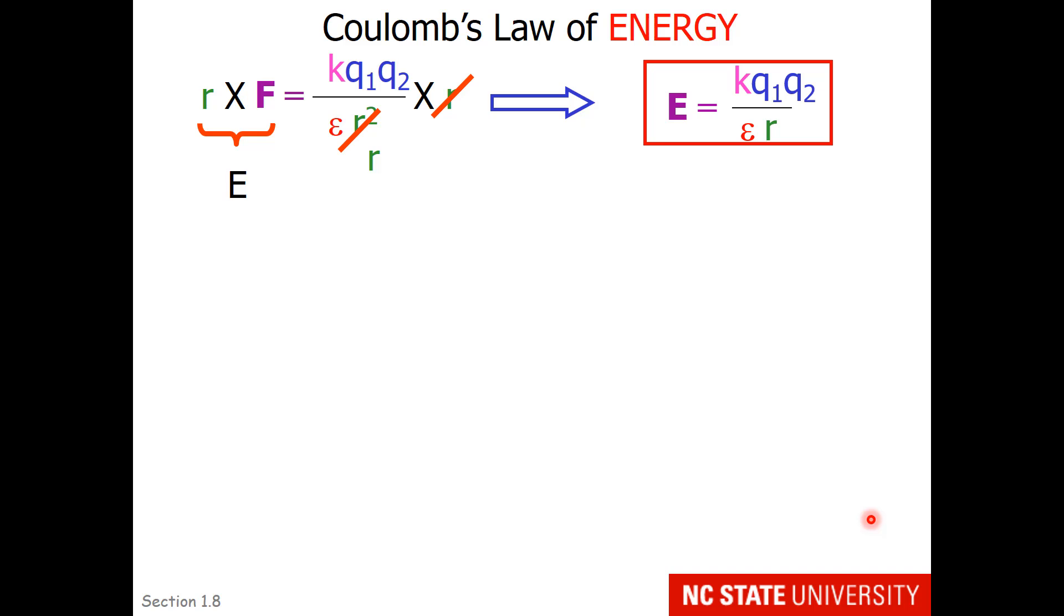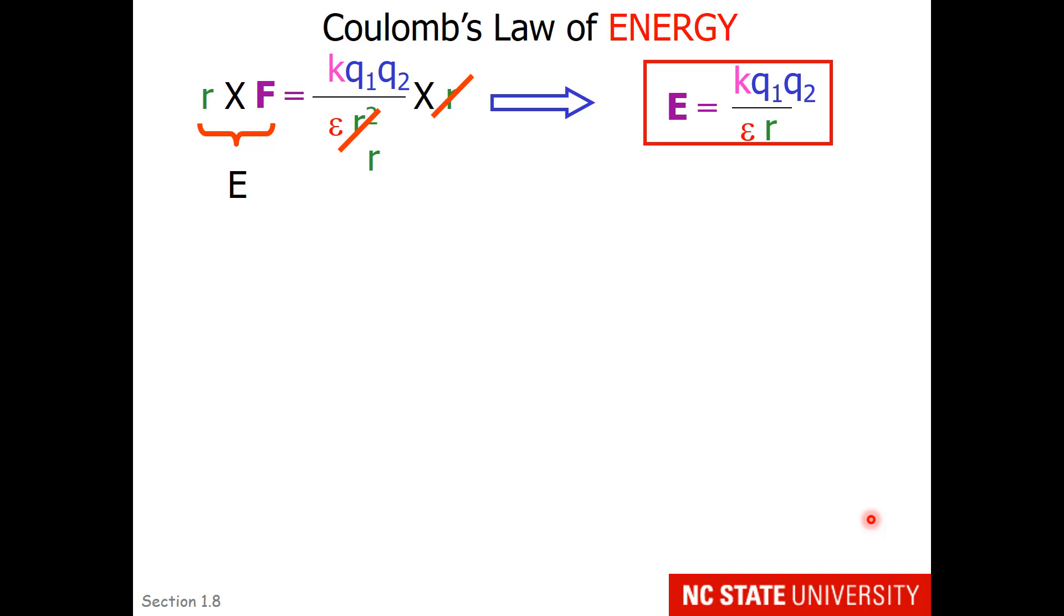So this is our formula for Coulomb's law of energy. So if we start to think about the particles in an atom, when q1 is positive, like a proton, and q2 is negative, like an electron, what is the sign of delta E when they move toward each other from infinity?